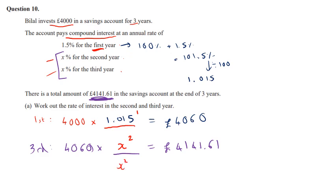So then to figure out our multiplier squared, we need to do £4,141.61 divided by 4,060, which gives us an answer of 1.020100985.